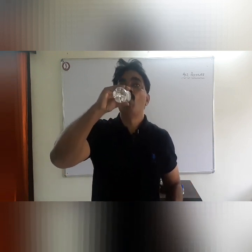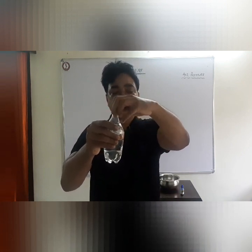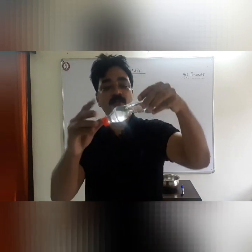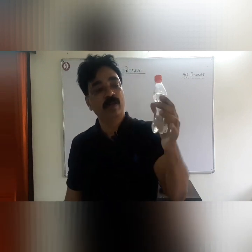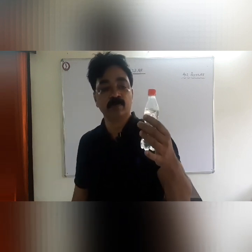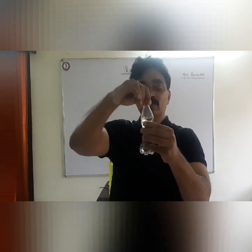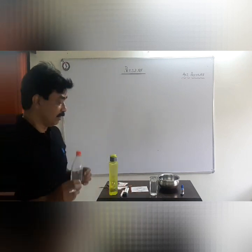I drink some water, press the bottle a little bit, and then quickly close the bottle — not allowing any air to get inside. I have closed the bottle quickly with the lid. So now there is no air inside to counter the pressure from outside, and that is why the bottle is not taking back its shape. But as soon as I open it, the bottle gains its shape back.